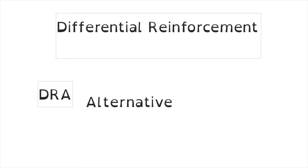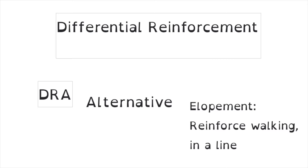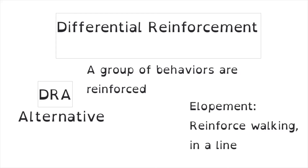DRA is relatively common in applied behavior analysis, where we are reinforcing a response class of behaviors — several behaviors that are alternative to the problem behavior will receive reinforcement. One example could be if a child regularly elopes or runs away from the classroom. We would reinforce walking behavior, staying with the class, or staying in line — any behaviors in place of elopement that are on-task and appropriate will get reinforcement. It's not one specific behavior but a group of behaviors alternative to the problem behavior.